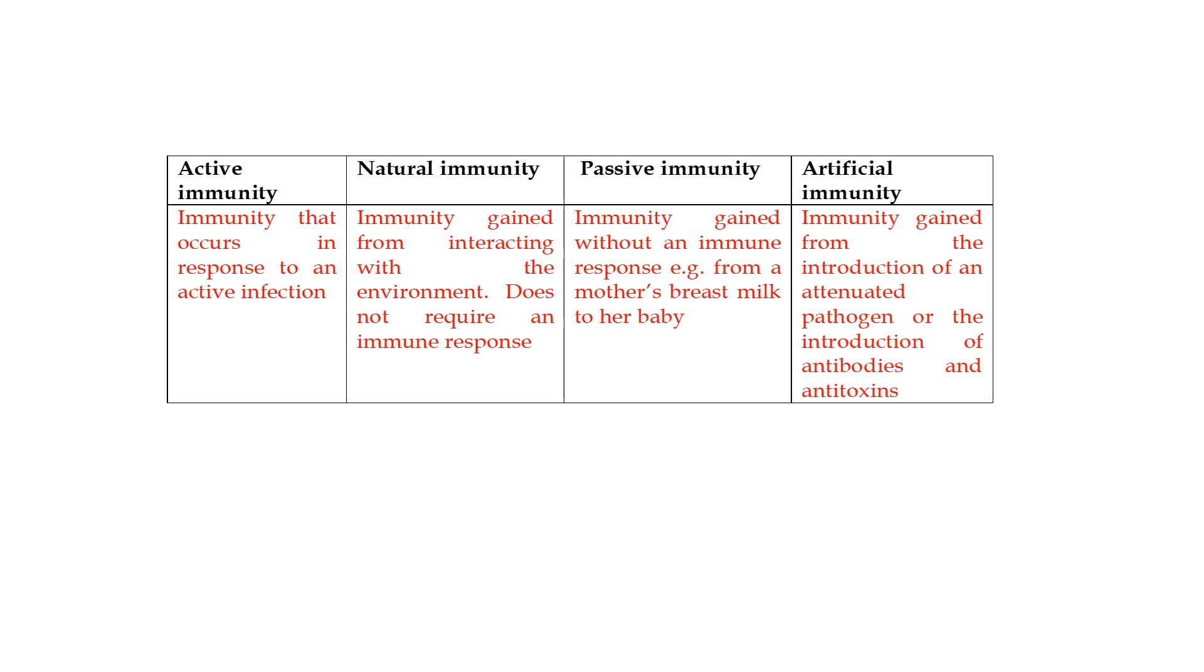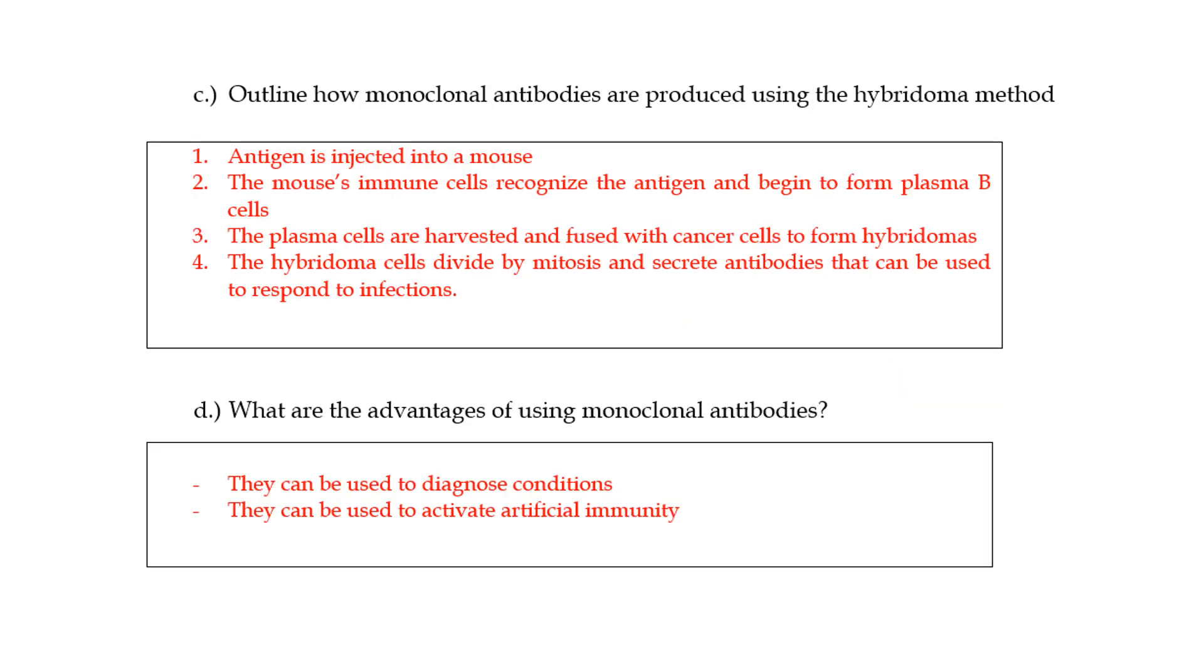You also have passive immunity, which is the immunity that you gain without an immune response at all. Immunity that comes from not necessarily you interacting with anything per se, but just getting it passively, like a baby being fed by the mother through breast milk. You can also have artificial immunity. Artificial immunity is the immunity that you gain from the introduction of a vaccine. It is basically what you get when you're introduced to an attenuated pathogen—that means it has been weakened—or when an antibody is injected into you to get your immune cells to learn what the antibody should look like.